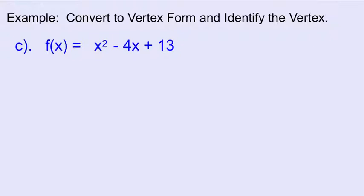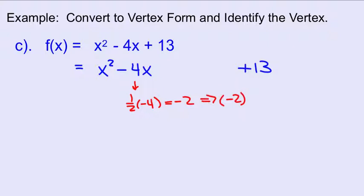Last one of these. x squared minus 4x, and then plus 13 down at the end. Half of negative 4 is negative 2. Then square it. Negative 2 times negative 2 is 4. So we're going to add 4 here and subtract 4 there.